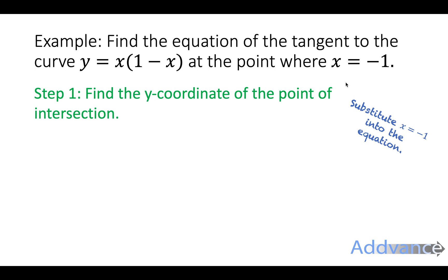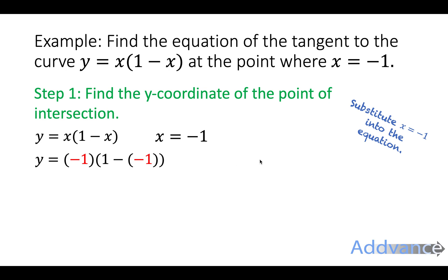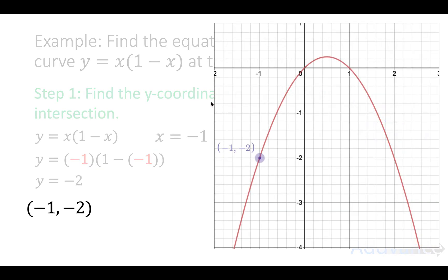To find this, we substitute x = −1. Since we know the x-coordinate, we find the y-coordinate by replacing x with −1, giving y = −2. So the coordinate of intersection is (−1, −2). I've drawn the red curve y = x(1 − x) here, and you can see that this point lies on the curve perfectly.